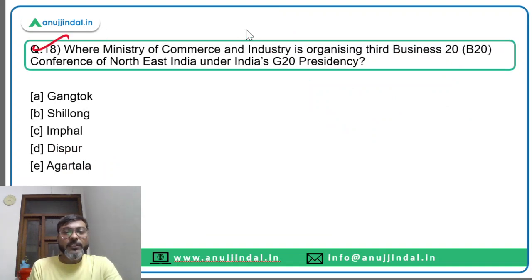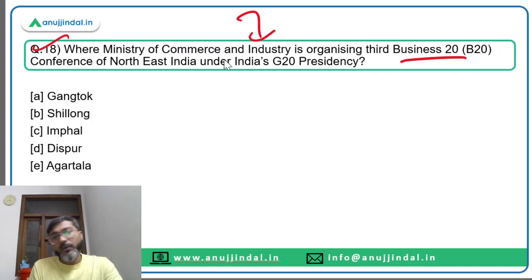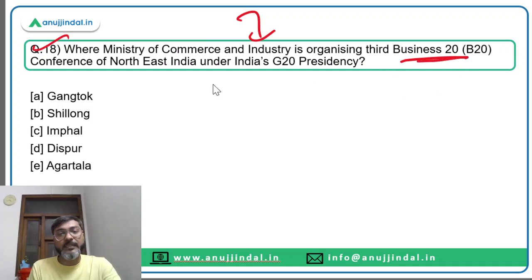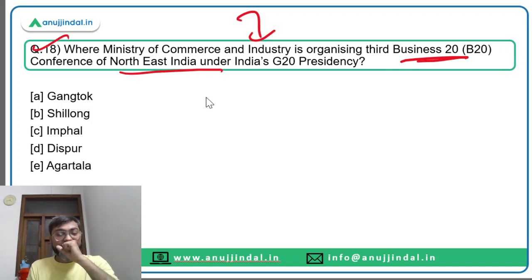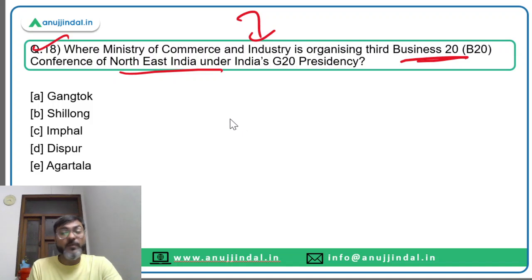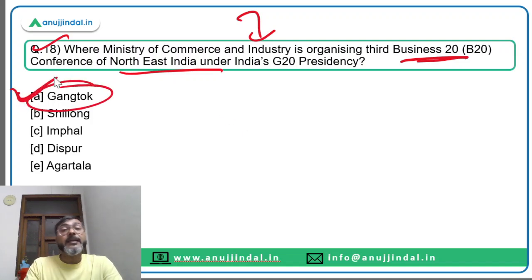Question eighteen: where is the Ministry of Commerce and Industry organizing the third B20 conference of northeast India under India's G20 Presidency? The third edition of Business 20 was organized in Gangtok. Option A is the correct answer.